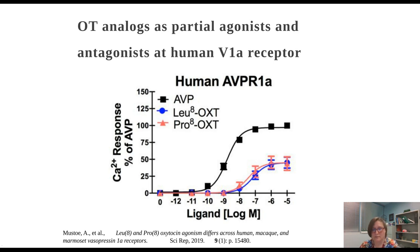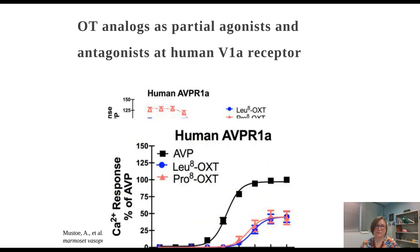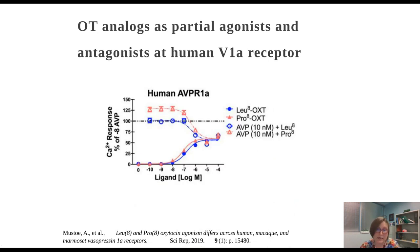This data was collected by a colleague looking at cells expressing human vasopressin receptor 1a. As expected, arginine vasopressin is its endogenous analog, so it was more potent and more efficacious than both leucine and proline oxytocin. Something very interesting was that when leucine and proline oxytocin were used in combination with arginine vasopressin, they actually acted as antagonists, suggesting that both leucine and proline at the human vasopressin receptor can potentially block the anxiogenic effects in addition to their anxiolytic effects at the oxytocin receptor.